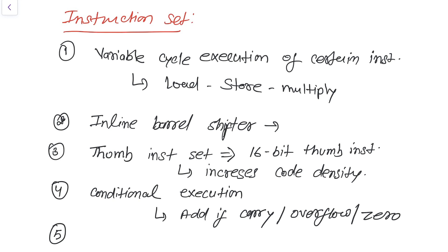The last feature, but not least, is enhanced instructions. Enhanced digital signal processor instructions were added to the standard ARM instruction set to support fast 16×16-bit multiplier operations and saturation arithmetic. These instructions allow the ARM processor to replace, in some cases, the traditional combination of a processor plus a DSP.